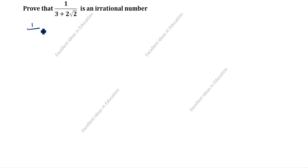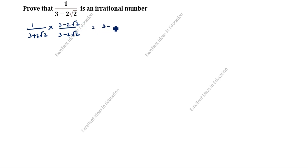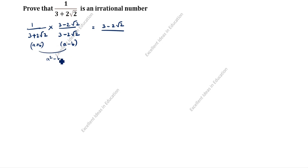To rationalize, since the denominator has plus, the rationalizing factor becomes minus — so we multiply by 3 minus 2 root 2 over 3 minus 2 root 2. This gives numerator 3 minus 2 root 2, and the denominator uses the formula a plus b into a minus b equals a square minus b square, where a is 3 and b is 2 root 2, the whole square.